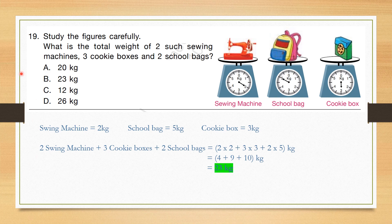Question number 19: What is the total weight of 2 sewing machines, 3 cookie boxes and 2 school bags? Sewing machine is 2 kg, school bag is 5 kg, cookie box is 3 kg. So: 2 sewing machines = 2 × 2, 3 cookie boxes = 3 × 3 kg, and 2 school bags = 2 × 5 kg. Total weight is 23 kg. Correct answer is option B, 23 kg.